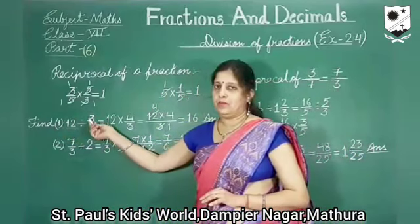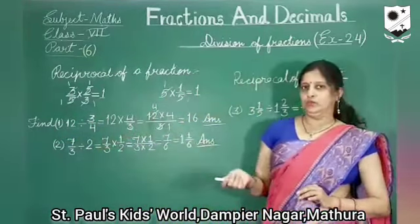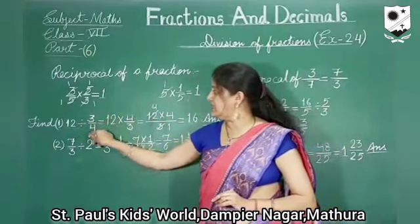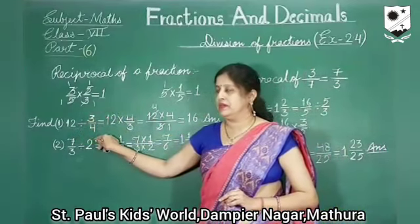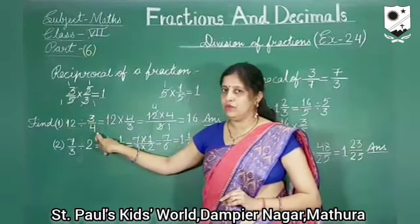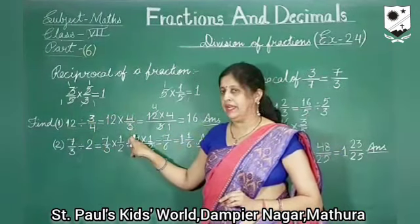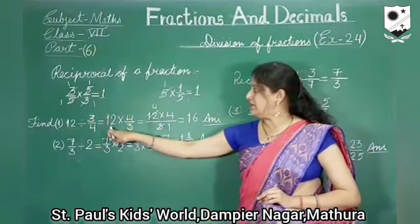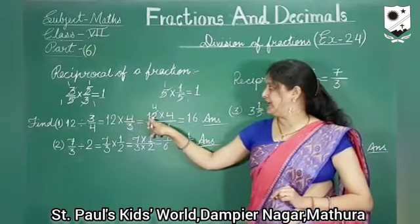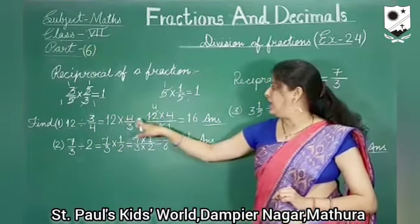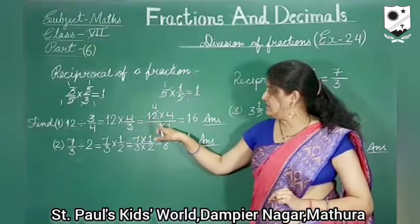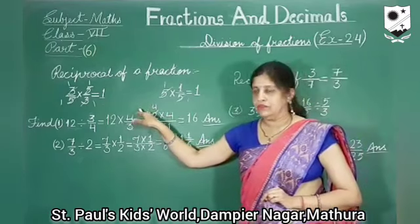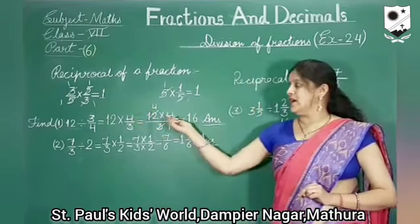12 divided by 3 upon 4. So what we will do? We will change this division sign into multiplication and write the reciprocal of the second number. The reciprocal of 3 upon 4 is 4 upon 3. Now we multiply 12 by 4 upon 3, which gives 12 multiplied by 4, whole upon 3. We can cancel because 3 is common in 12 — 3 ones are 3 and 3 fours are 12. Now 4 fours are 16, so the answer is 16.